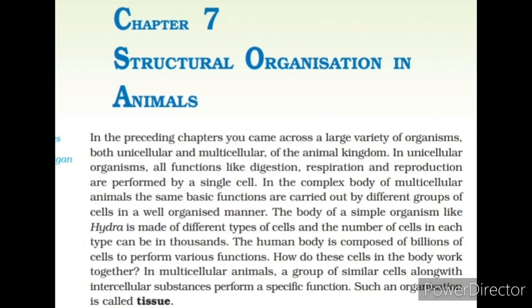Chapter 7: Structural Organization in Animals. In the preceding chapters, you came across a large variety of organisms, both unicellular and multicellular, of the animal kingdom. In unicellular organisms, all functions like digestion, respiration and reproduction are performed by a single cell. In the complex body of multicellular animals, the same basic functions are carried out by different groups of cells in a well-organized manner.